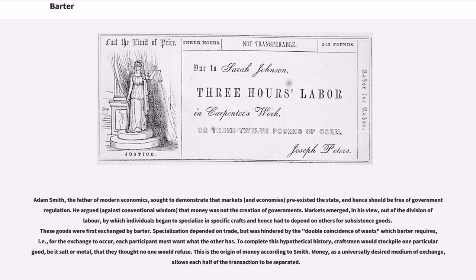Specialization depended on trade, but was hindered by the double coincidence of wants which barter requires — i.e., for the exchange to occur, each participant must want what the other has. To complete this hypothetical history, craftsmen would stockpile one particular good, be it salt or metal, that they thought no one would refuse. This is the origin of money according to Smith.